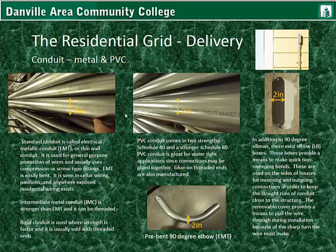So now we need to talk about conduit — it's almost like a piping that you run conductors through. The standard conduit is called Electrical Metallic Conduit, or EMT, also called Thin Wall. It is used for general purpose protection of wires, and usually uses compression or screw type fittings. EMT is also easily bent. It's seen in cellar wiring, pavilions, and anywhere exposed residential wiring exists.